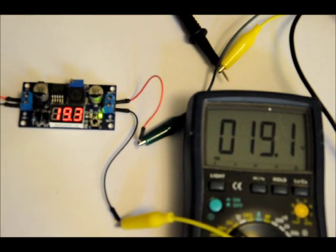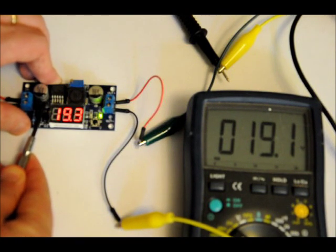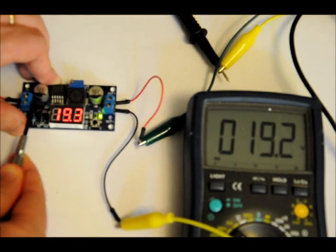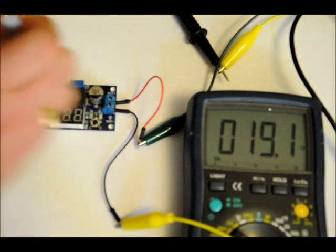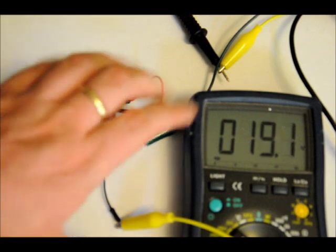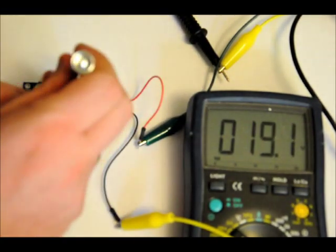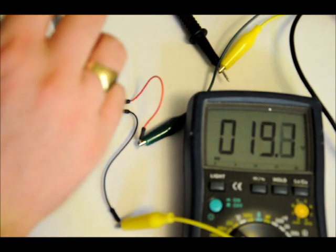Another cool thing is you can actually pop off this little jumper here, even on the fly, to save power. As you can see, the display turned off and the display circuitry turned off. Now this doesn't affect the device. You can still vary the output based on the maximum input voltage.